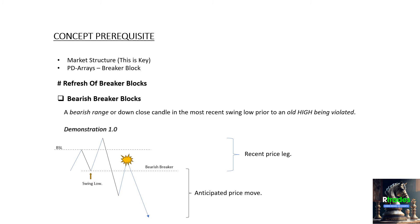To grab this content and hold on to it, you have to know some basic concepts first. You must be conversant with market structure, and you must be conversant with certain PD arrays — specifically the breaker block: how to navigate through it, how to trade it, and how to identify it. If you don't know about these two, go watch my videos or visit the ICT YouTube channel for videos on those topics.